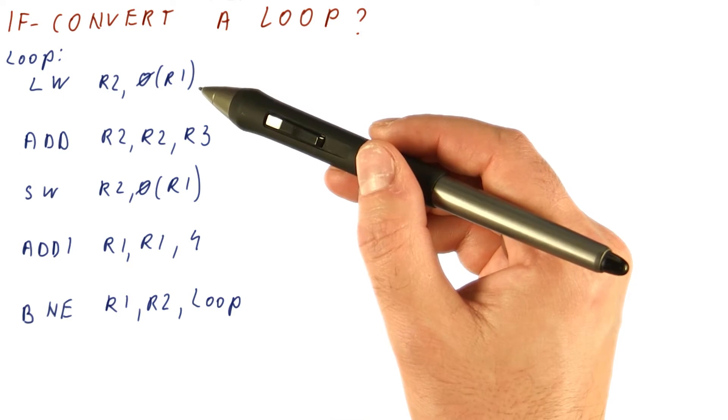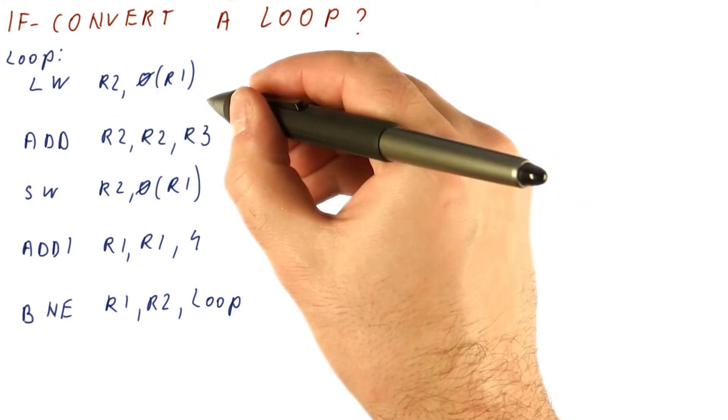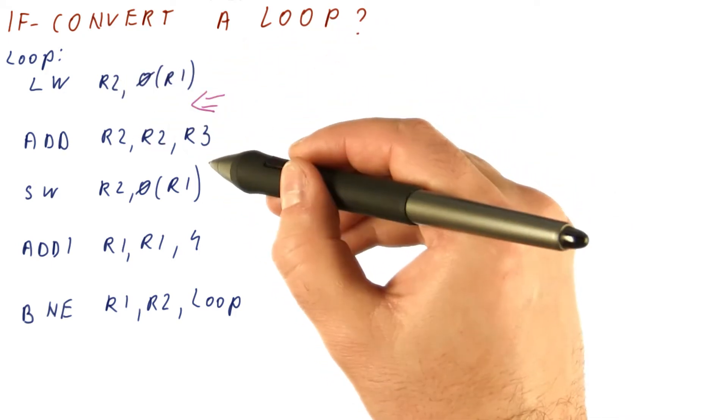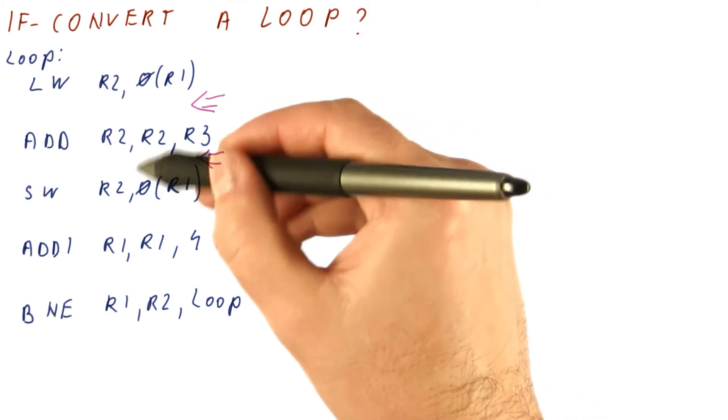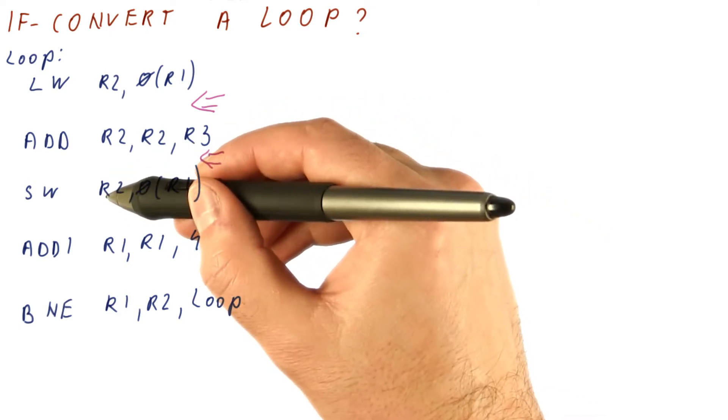Let's say that in this processor, every operation takes two cycles to do, so we will have a stall cycle here because we need to use R2 two cycles later. Another stall cycle here, because the add needs to operate for one more cycle before the store can see that value.